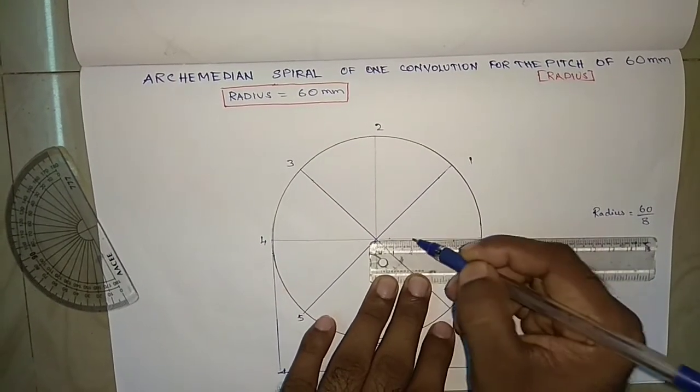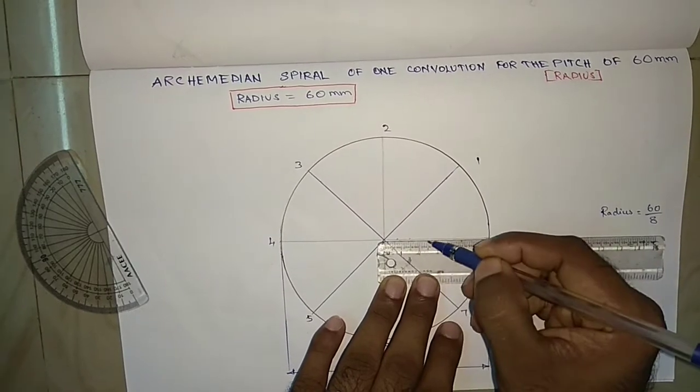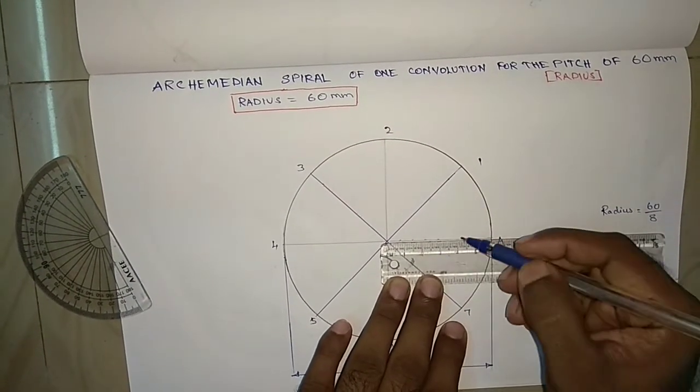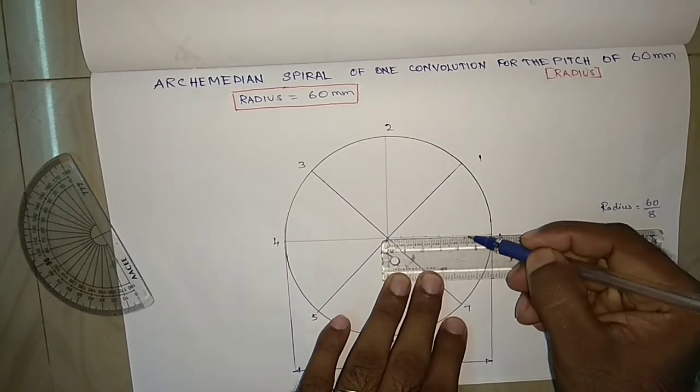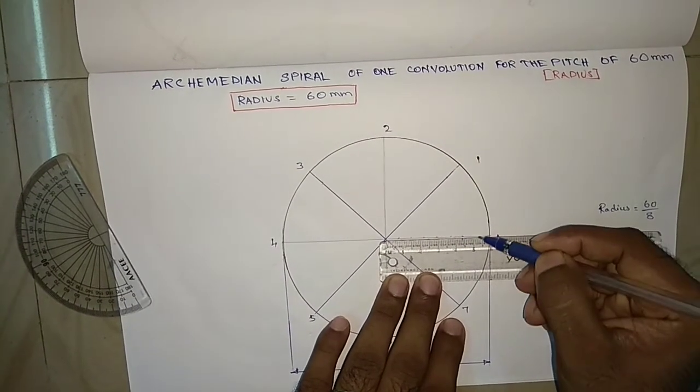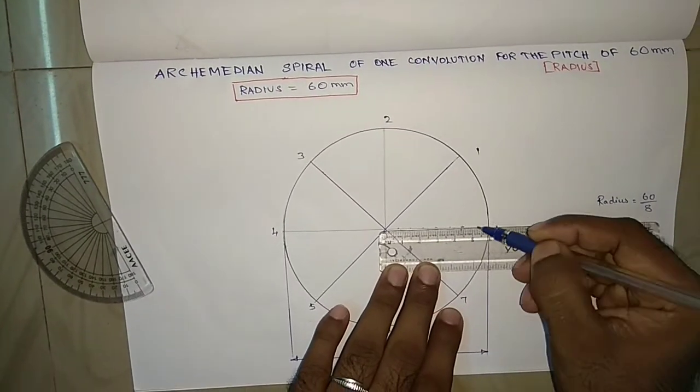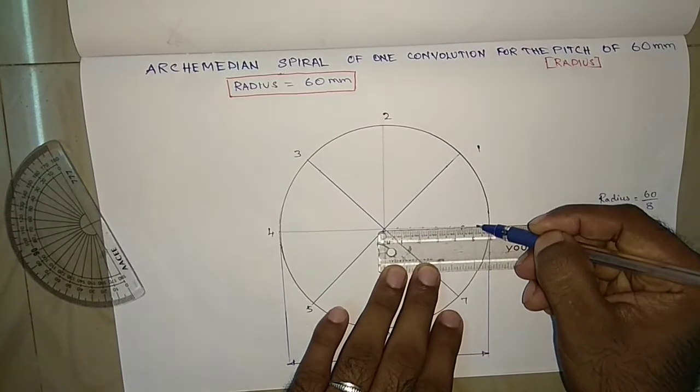7.5, one more 7.5 is 15, again 7.5 is 22.5, 30, 37.5, 45, 52.5, then the end is obviously 60mm.